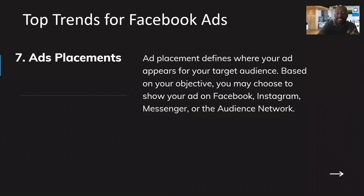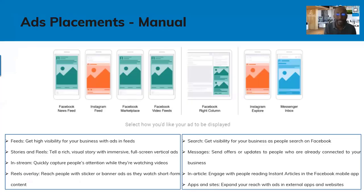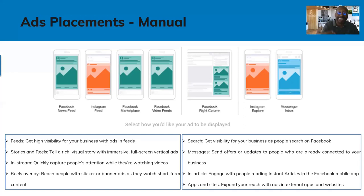Ad placements refer to where the ad will actually show on a phone or computer. You have different variations: news feed, Instagram feed, Facebook Marketplace, video feed, right column, Instagram Explore, and the Messenger inbox. These are the different options for where your ad will appear. Keep in mind that over 85% — close to 90% or higher — of searches start on a mobile device. Think about which ad placement will best benefit your end user and have them more apt to take action.